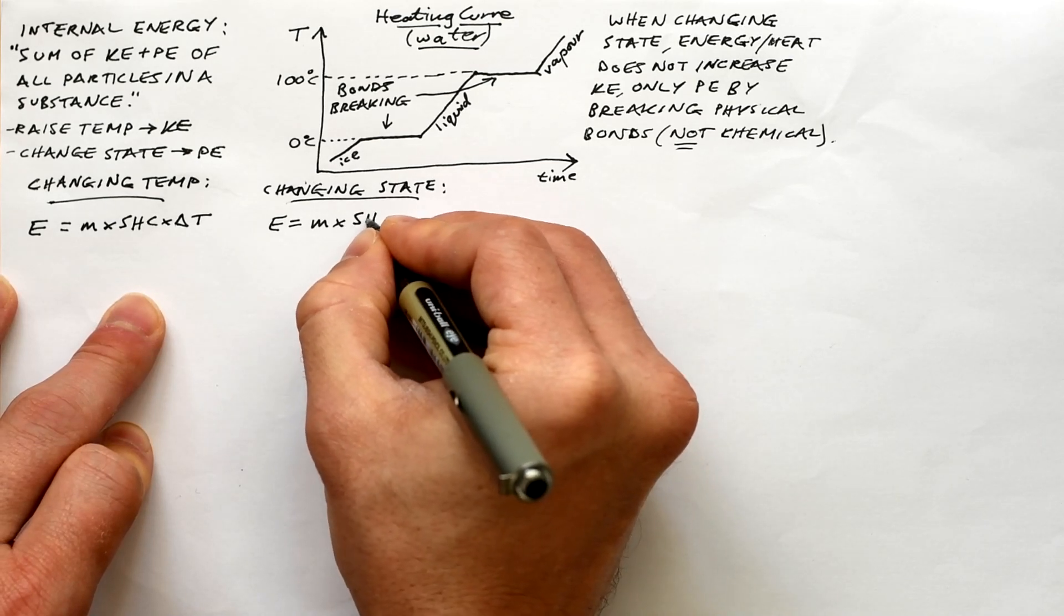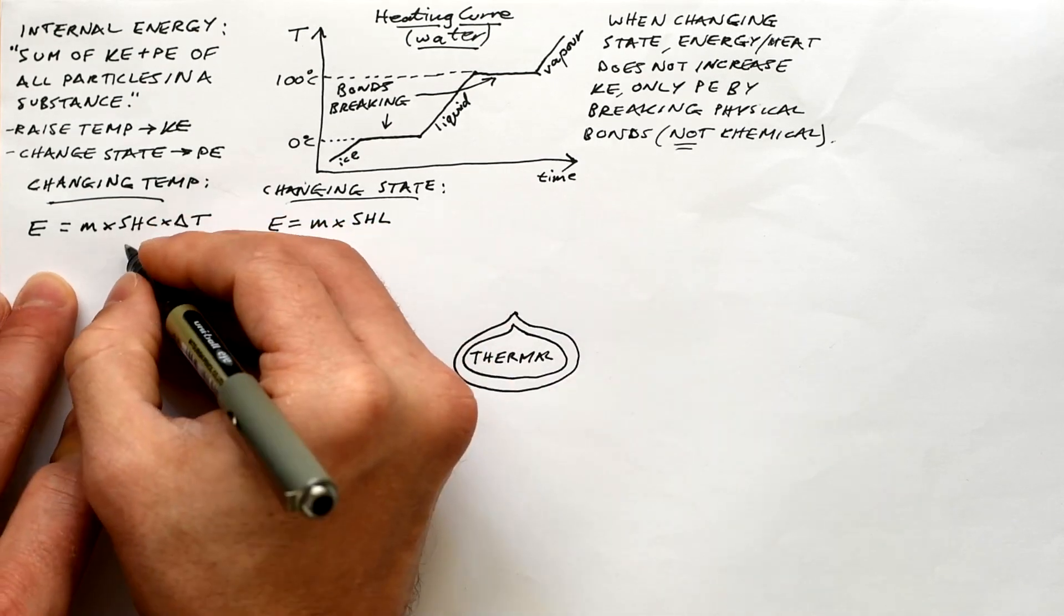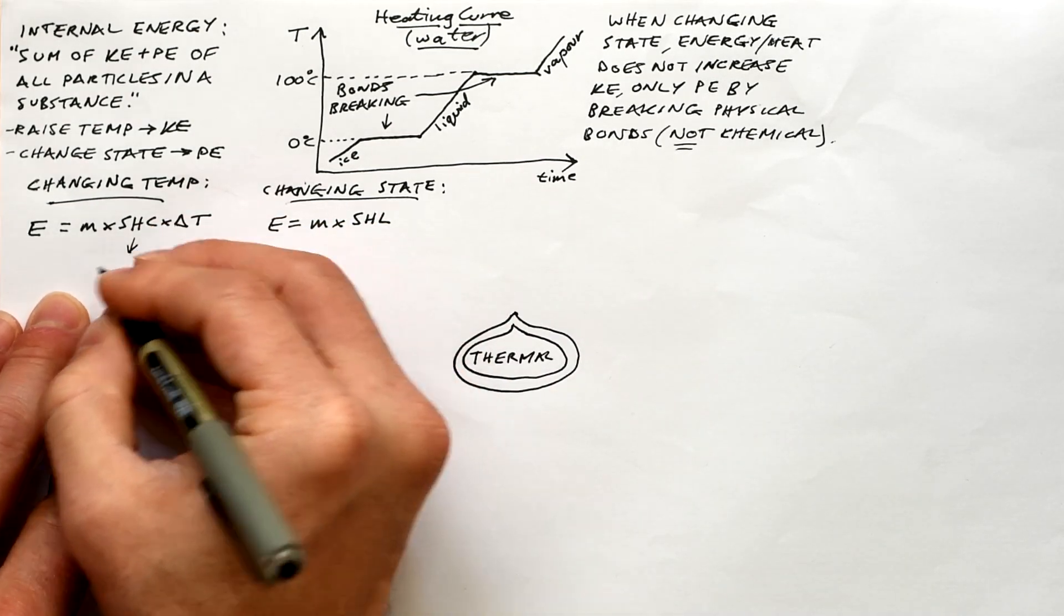For changing state, we have the specific latent heat equation, energy equals M times SLH. I've had a bit of a brain fart there. Don't worry, it's fixed on the mind map.